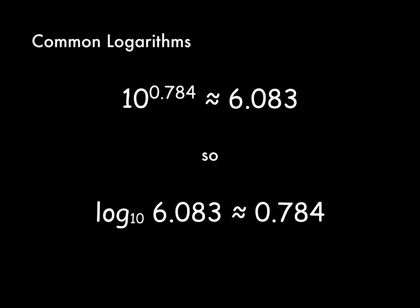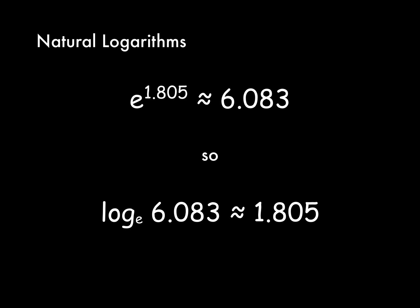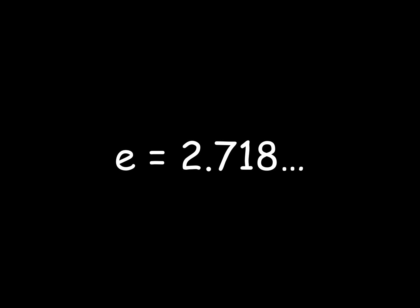Before calculators, lots of people used base 10 logs for multiplication problems. But mathematicians prefer logarithms to an unexpected base. You may know about this kind of log. They're called natural logarithms. And the base is a number a little bigger than 2.7 that people call e.